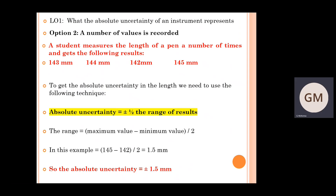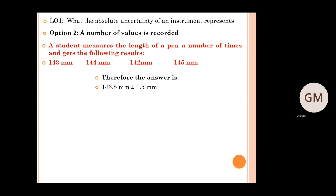To get the absolute uncertainty in the length, we use the following technique: the absolute uncertainty equals plus or minus half the range of results. The range equals the maximum value recorded — 145 — minus the minimum value recorded — 142 — divided by two. In this particular example, the absolute uncertainty ends up being plus or minus 1.5 millimetres. Therefore, our answer is 143.5 millimetres plus or minus 1.5 millimetres.